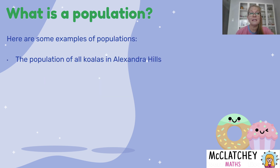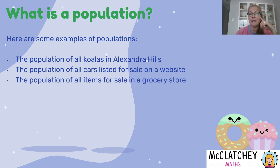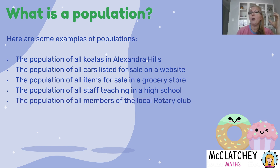We can have smaller groups as populations — for example, a koala population in a particular suburb, all cars listed on a car sales website, every item for sale in a grocery store, all staff teaching at a high school, all students of a school, or just the students of Grade 7, or all the members of a particular rotary club.